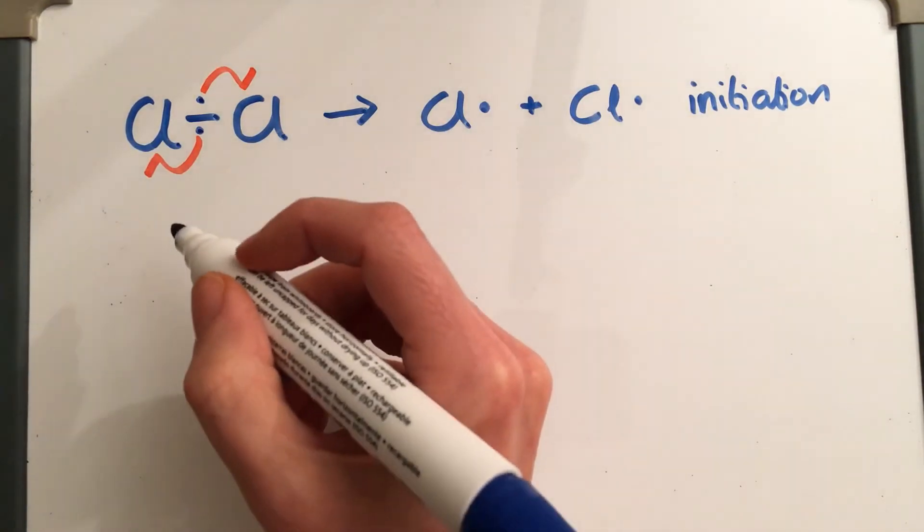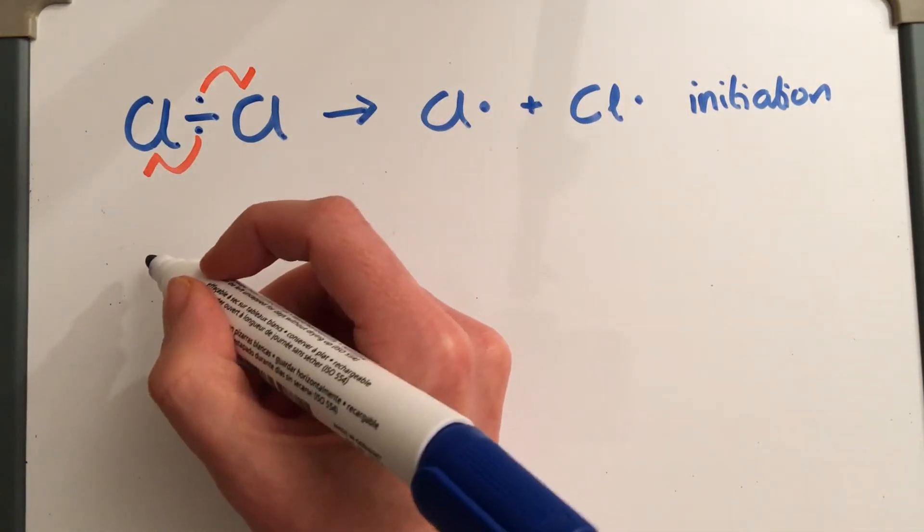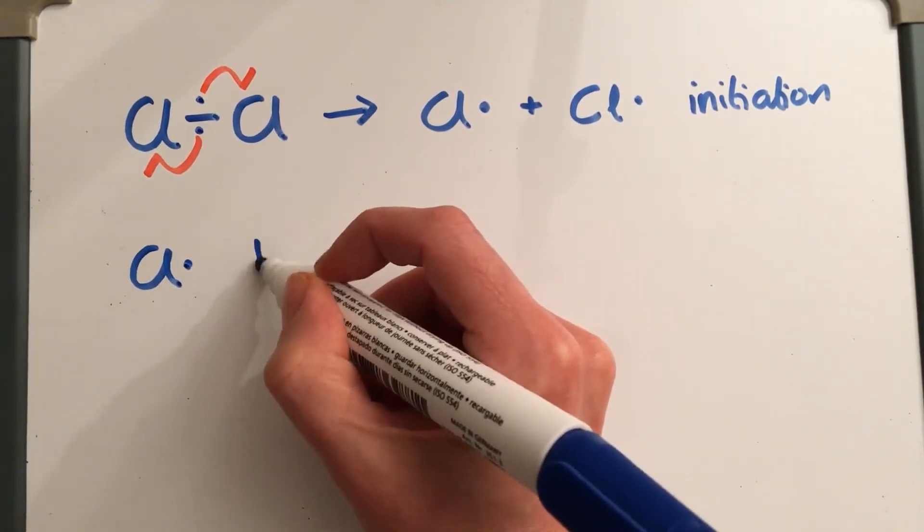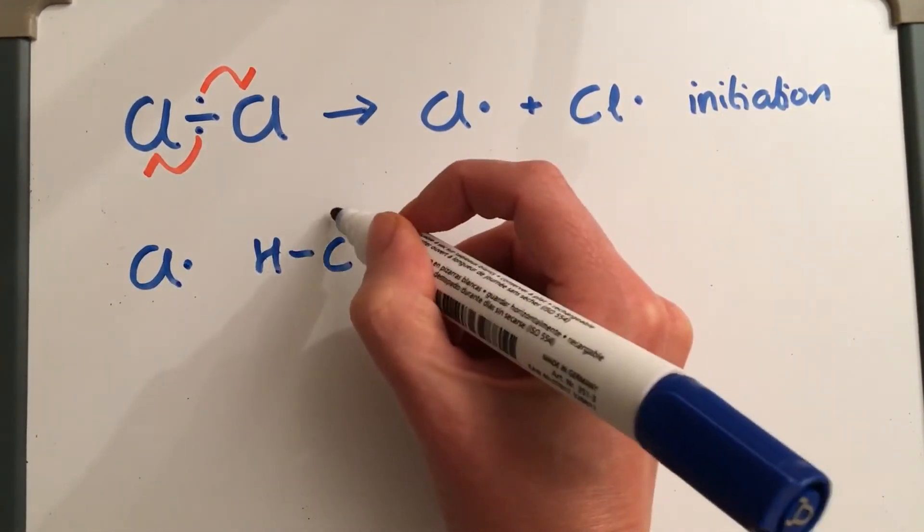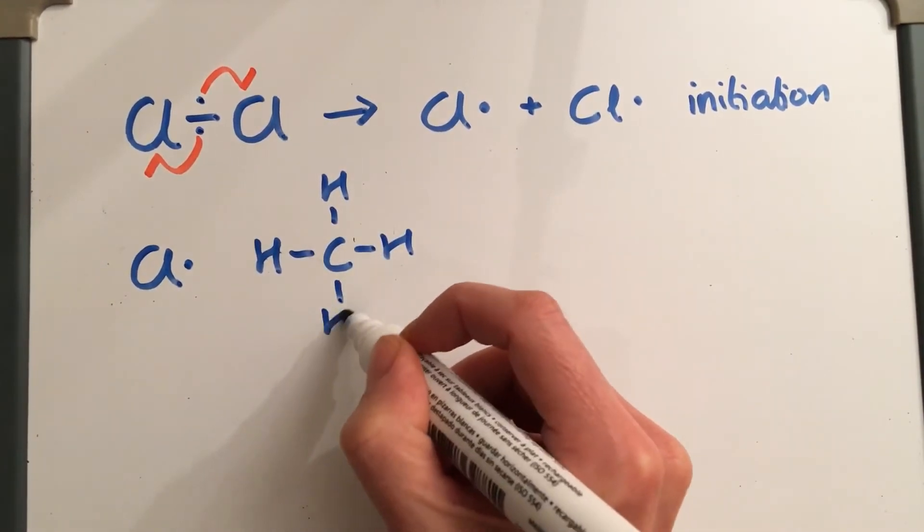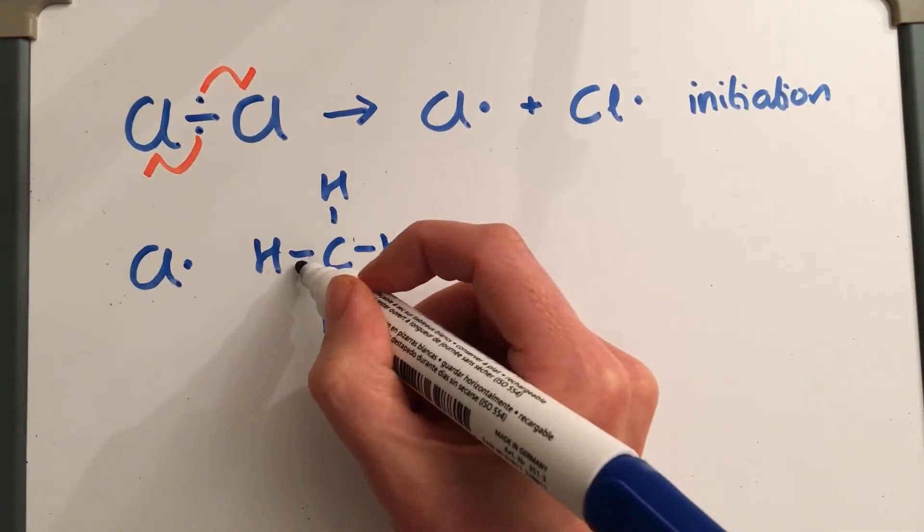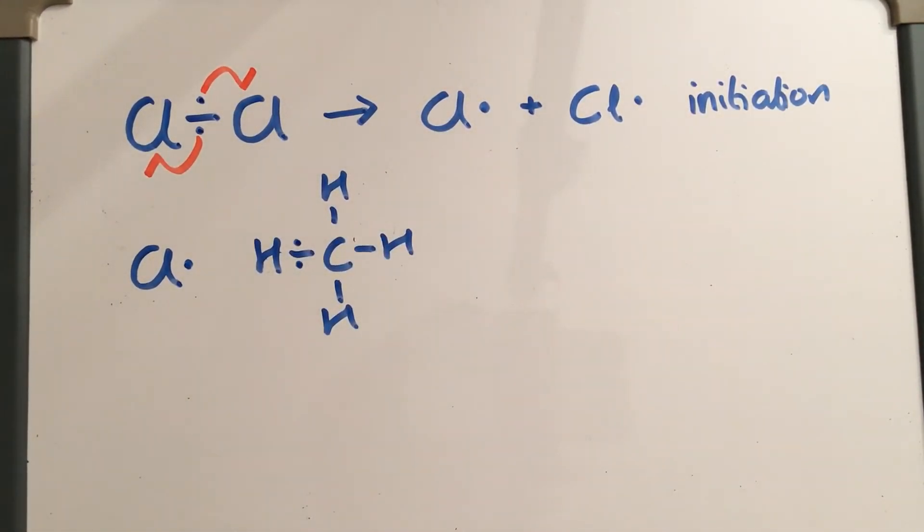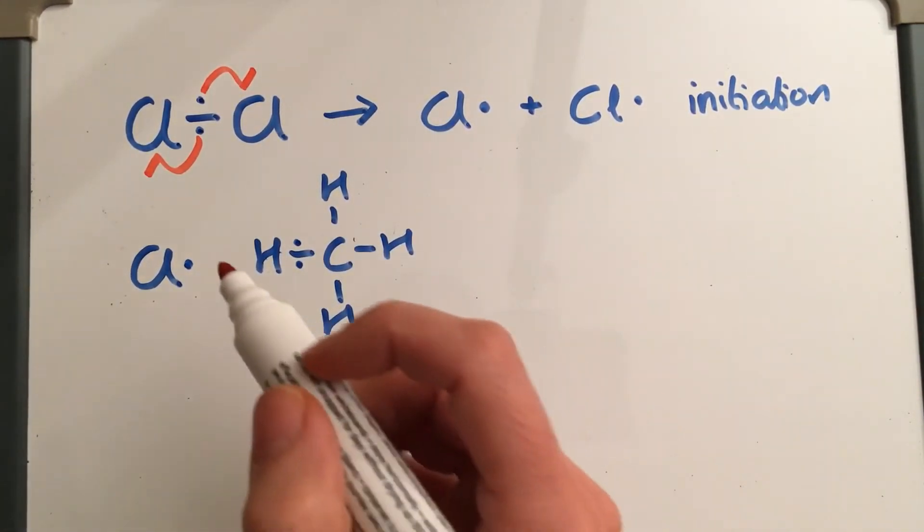So then we have got a chlorine radical which is going to react with our methane. And in our methane, in each of these carbon-hydrogen bonds, we've got two electrons, a shared pair of electrons in a covalent bond.